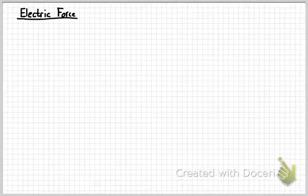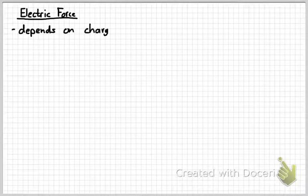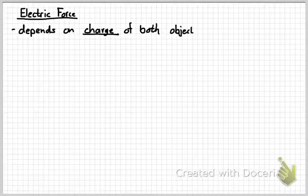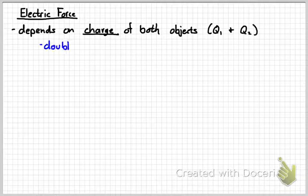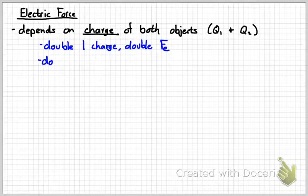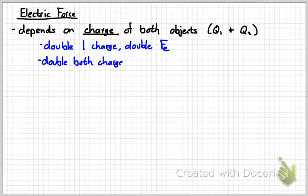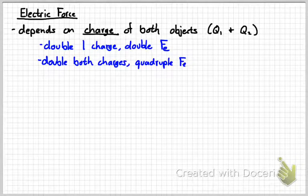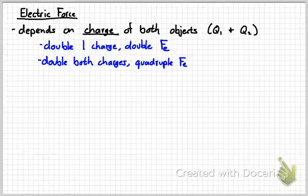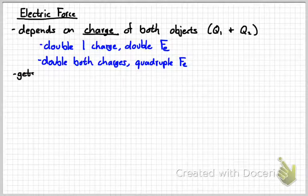After we finished the gravitational force, we discussed the electric force. Remember that the electric force depends on the charge of both objects, not the mass. But it has the same relationship. You double one charge, you double the electric force. If you double both charges, you quadruple the electric force. The symbol for charge is q. You can use either capital or lowercase. And the unit is the coulomb.